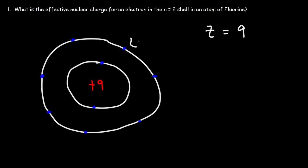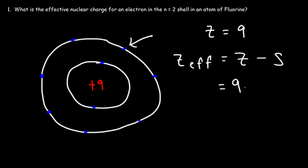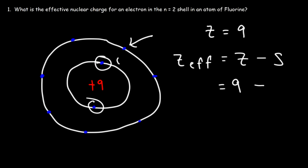Our goal is to find the effective nuclear charge of one of these electrons. The electrons in the outermost energy level are called valence electrons. To calculate the effective nuclear charge — this is the simplified way — it's equal to Z, the number of protons in the nucleus, minus the number of inner shell electrons, or core electrons. There are 9 protons, and only 2 inner shell electrons with respect to a valence electron. Those 2 electrons shield the valence electron from the nucleus, reducing the effective nuclear charge.